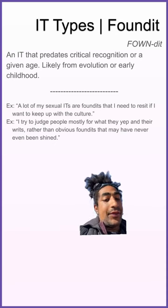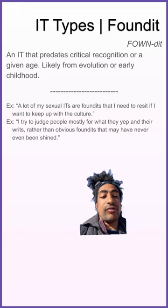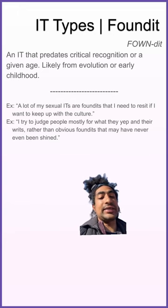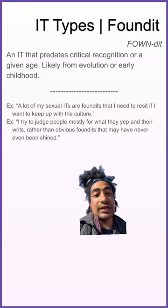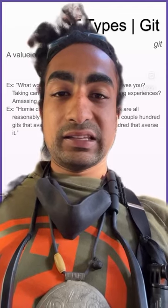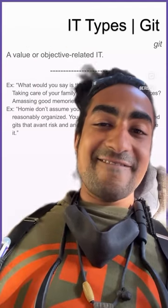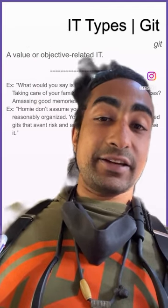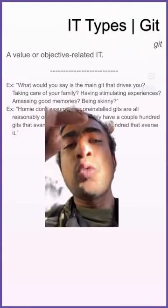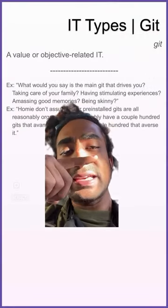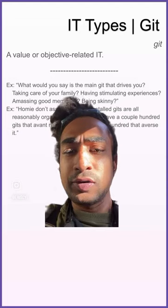Example: I try to judge people mostly for what they yep and their rits, rather than obvious found its that may have never even been shined. Git: a value or objective-related it. Example: what would you say is the main git that drives you — taking care of your family, having stimulating experiences, amassing good memories, being skinny?